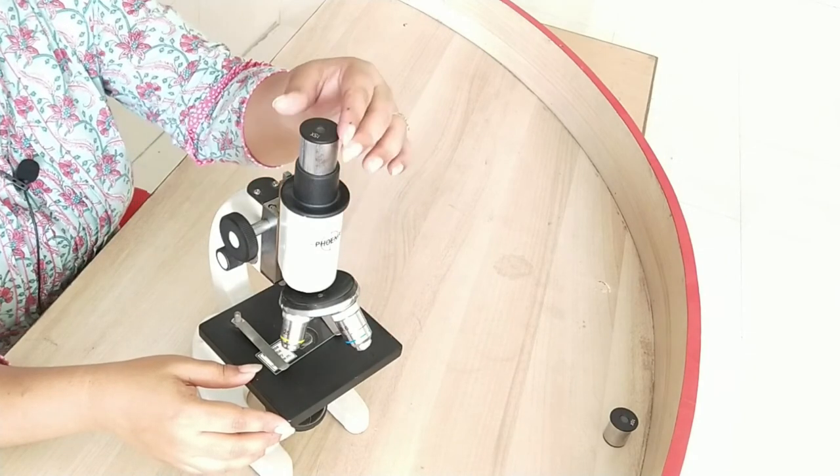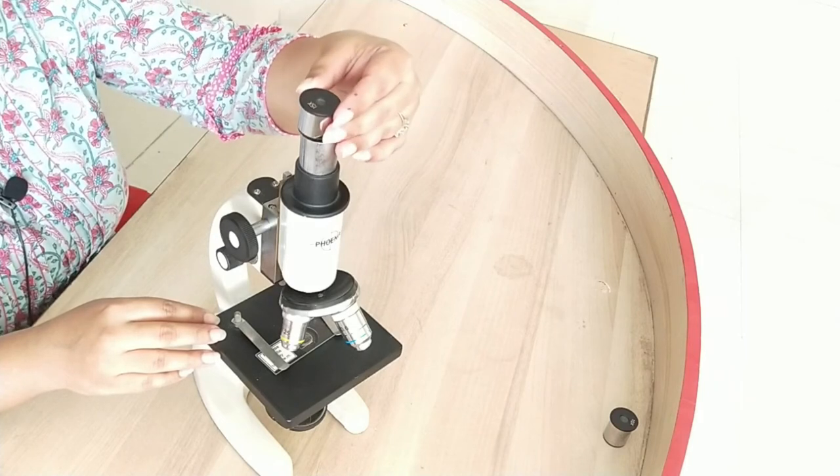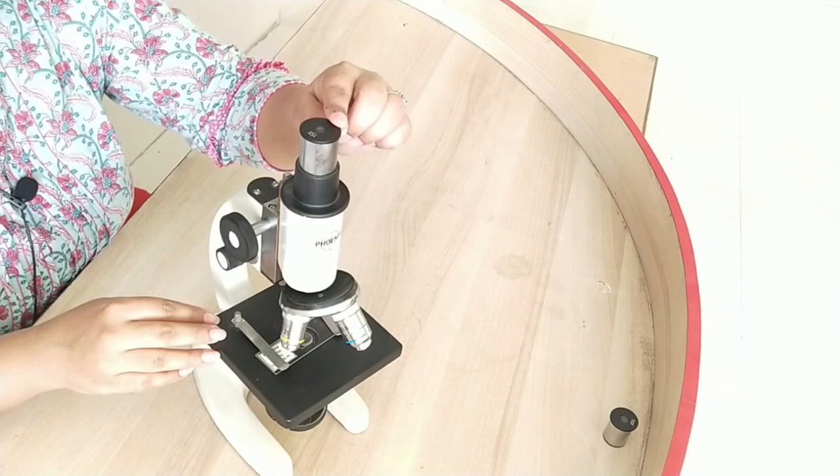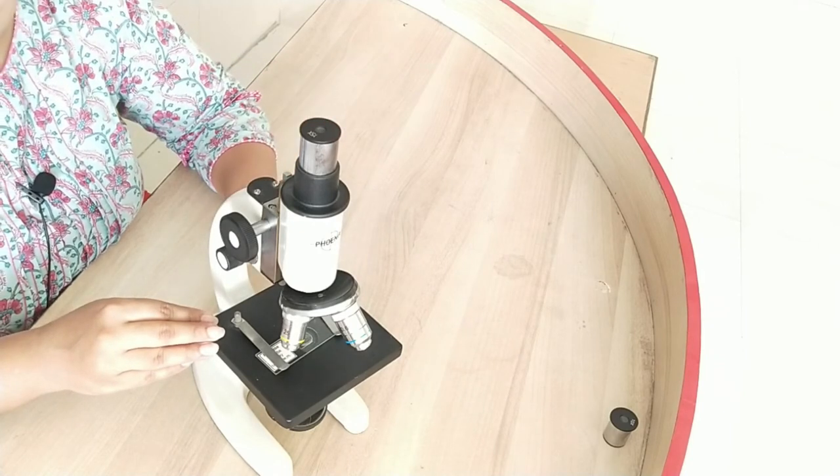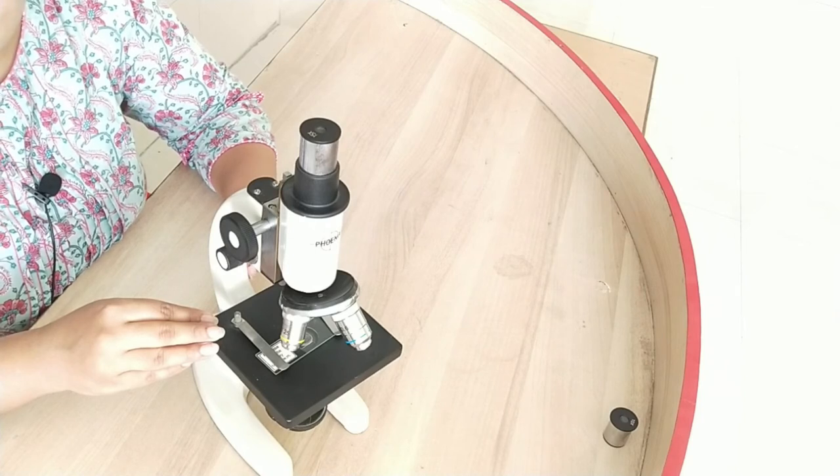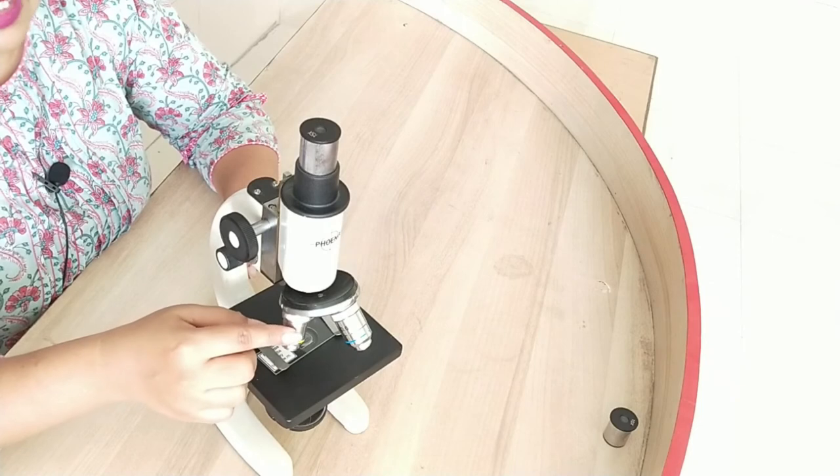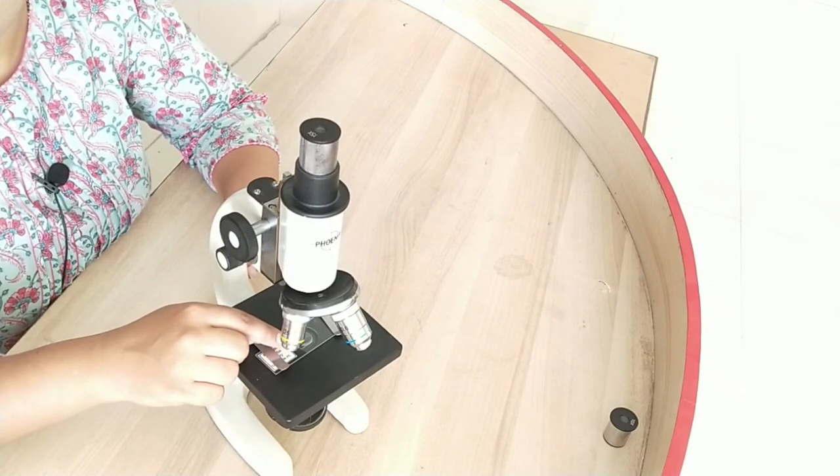Number one is the eyepiece. It is also known as ocular. You know why it is called an eyepiece? Because this lens is closer to the eye while observing a slide. And similarly these lower lenses are called objective lenses because they are closer to the object that we will observe.